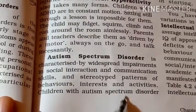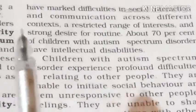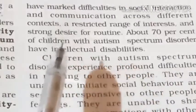Children with autism spectrum disorder have marked difficulties in social interaction and communication across different contexts. They can't do social interaction or communication in different settings — whether with family or teachers. They also show a restricted range of interests and a strong desire for routine.